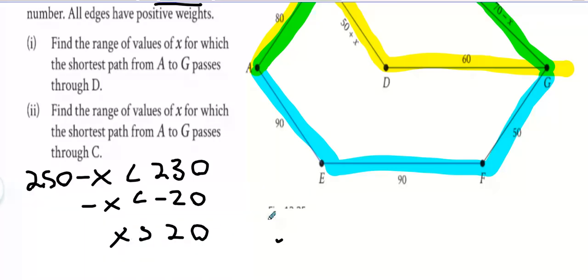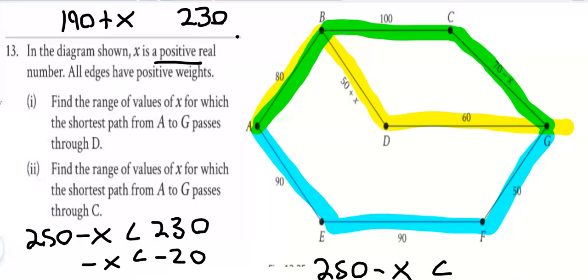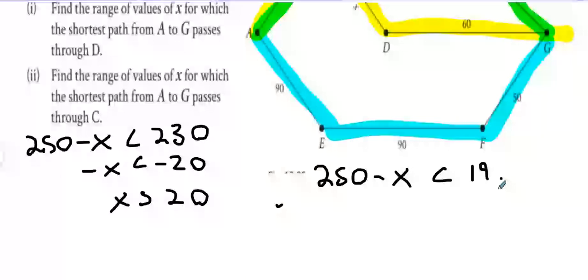We also want 250 minus x, which is the green route, to be shorter than the yellow route, which is 190 plus x. Bringing the x out to this side: minus 2x less than minus 60. Divide both sides by minus 2, you've got x bigger than 30.